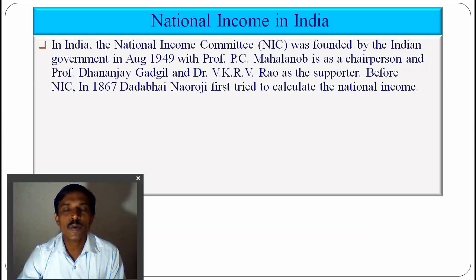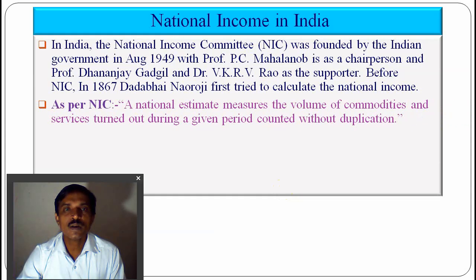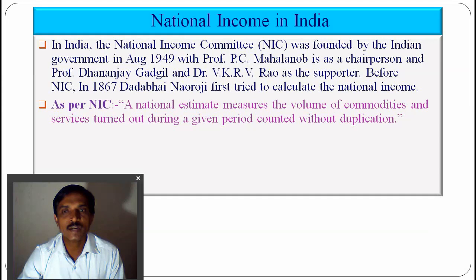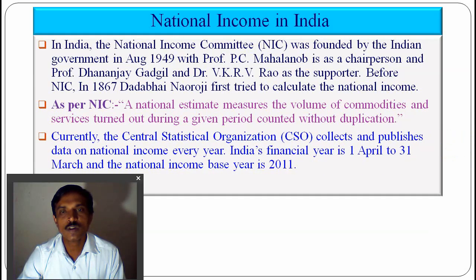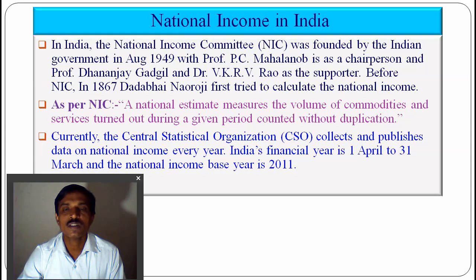Before that, in the year 1867, Dada Bhai Nauraji was the first to try to calculate the national income of India. The National Income Committee gave the definition: national income estimates measure the volume of commodities and services turned out during a given period without duplication. Currently, the Central Statistical Organization (CSO) collects and publishes national income data every year in India. India's financial year starts from 1st April to 31st March, with 2011 as the base year.